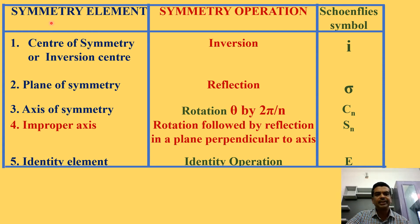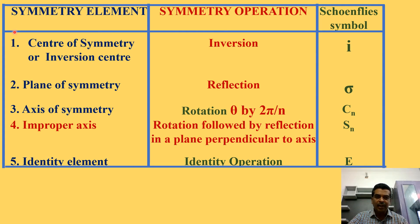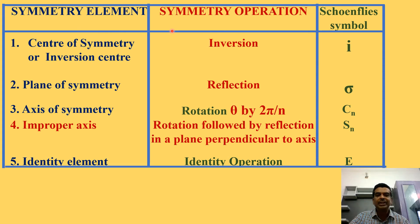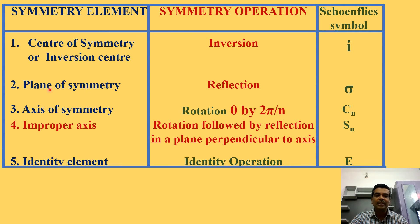Let us differentiate symmetry elements and symmetry operations, and look at their types. There are four types of symmetry elements. First, the center of symmetry, also called the inversion center. The symmetry operation corresponding to this element is the inversion operation. It is represented by the Schoenflies symbol 'i'. The second symmetry element is the plane of symmetry, and the symmetry operation is reflection through a mirror. It is represented by sigma (σ).